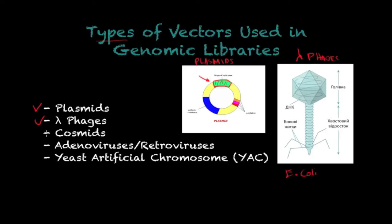The third type of vector are cosmids, which are synthetic vectors created in the lab setting. The others include adenoviruses and retroviruses. The last one worth mentioning, which you'll likely hear about in your classes, are yeast artificial chromosomes, abbreviated as YAC.